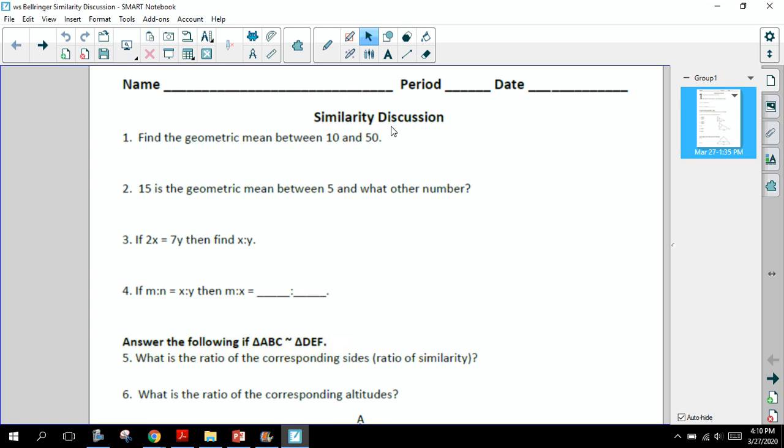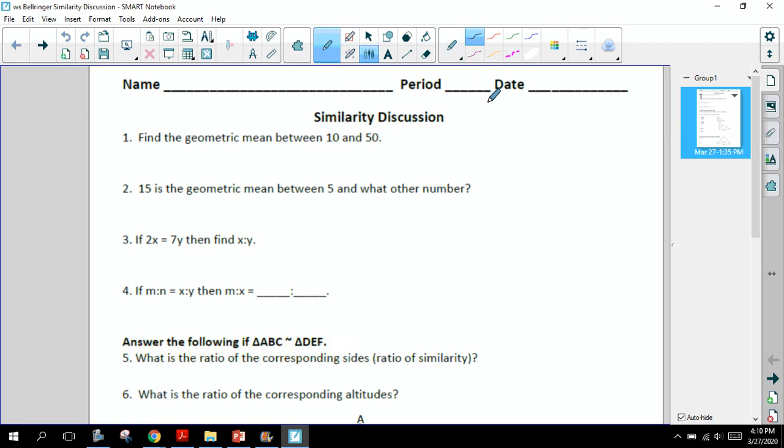First one says to find the geometric mean between 10 and 50. If you remember back when we talked about a geometric mean, a geometric mean is a proportion where the means repeat. So I've got A over B is equal to B over C. If you remember A and C were my extremes, the B value or the number that repeats is the means. So B is a geometric mean because it's the same number twice in the position of the means. So to find the geometric mean between 10 and 50, we would write the proportion where I'm finding the geometric mean.